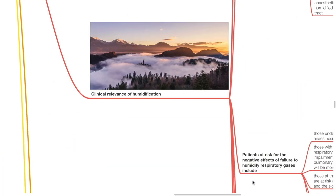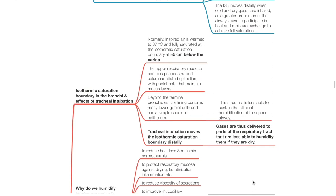Clinical relevance of humidification: the isothermic saturation boundary and the effects of tracheal intubation. Normally the ISB is about 5 cm below the carina. The upper respiratory mucosa contains pseudostratified columnar ciliated epithelium with goblet cells that maintains the mucus layers. Beyond the terminal bronchioles, the lining contains many fewer goblet cells and has a simple cuboidal epithelium. This structure is less able to sustain the efficient humidification of the upper airway. Tracheal intubation moves the ISB distally, so gases are delivered to parts of the respiratory tract that are less able to humidify them if they are dry.